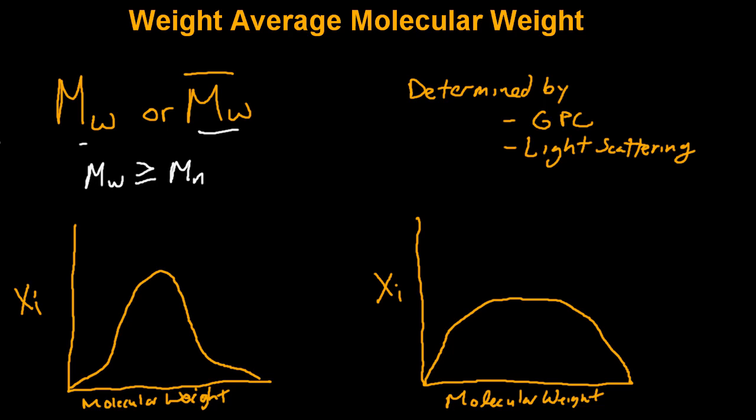Why is this important? Two samples theoretically could have the same number average molecular weight, but they could have significantly different weight average molecular weights. And oftentimes, larger polymer chains will have a larger influence in the properties of a sample as a whole.